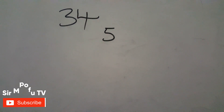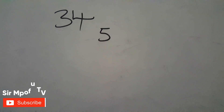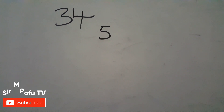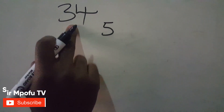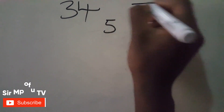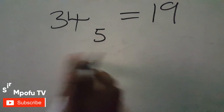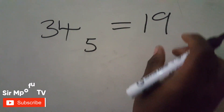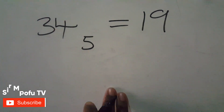I'm going to show you the easiest method, then prove it with the long method which is the expansion method. The short method will just say five times three, which is 15, plus four — the answer will be 19. So 34 in base 5 is 19 in base 10. Remember, base 10 you can write it or you can leave it out.